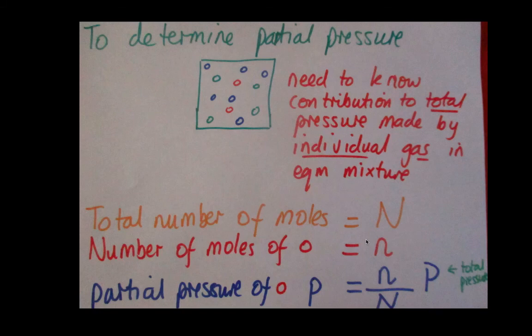Now, we know that the total pressure is P. So, basically, the partial pressure of our red gas here will just be the fraction of the moles that is made up by n times the total pressure.